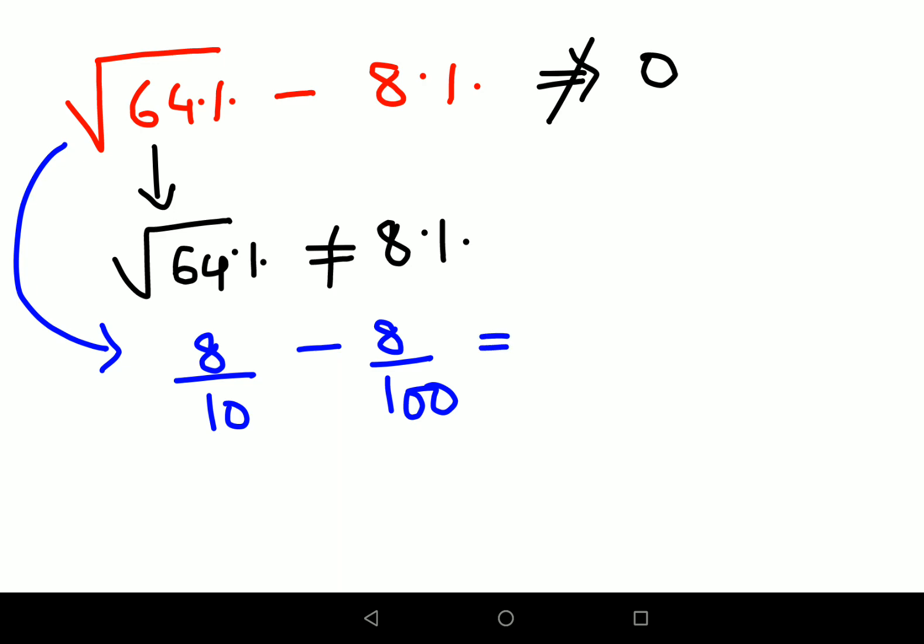Now obviously the denominators are different, so we will have to take the LCM. For that we will look at the highest number. So we have 100 and we know that 10 divides 100 completely. So you will take the LCM as 100 and you will multiply 10 with 10 to get it as 100.